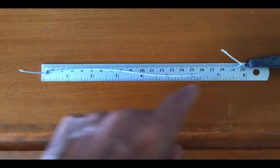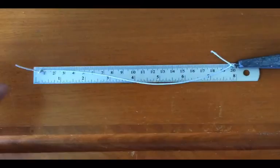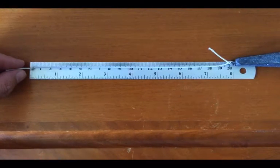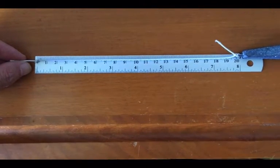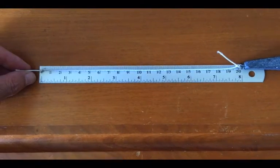Okay, here we have an elastic string with one weight attached at one end, and the length from the knot there to the weight is going to be, so the natural length will be 20 centimeters or 0.2 meters.